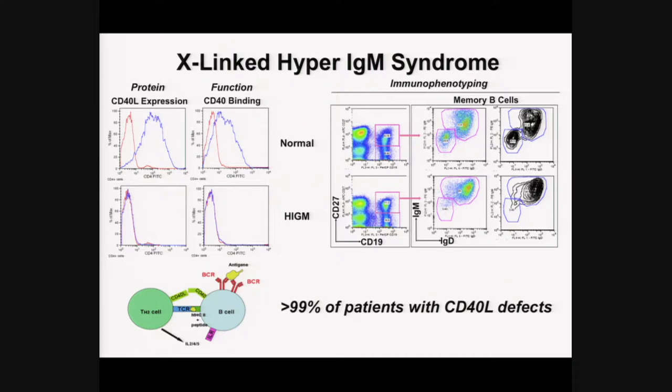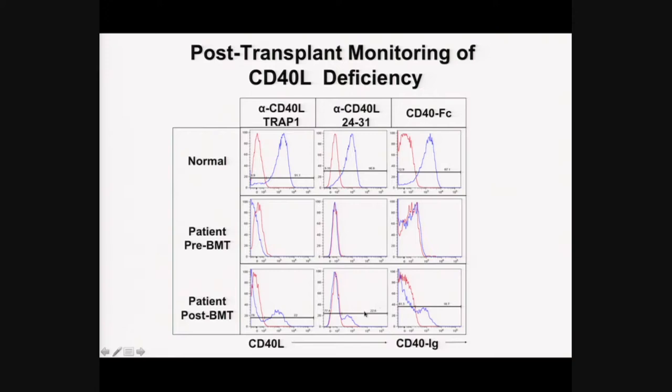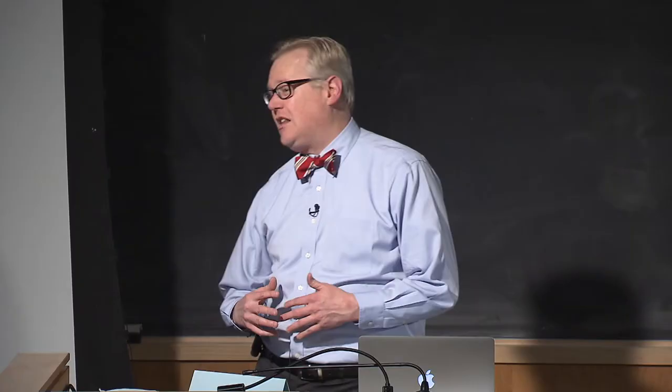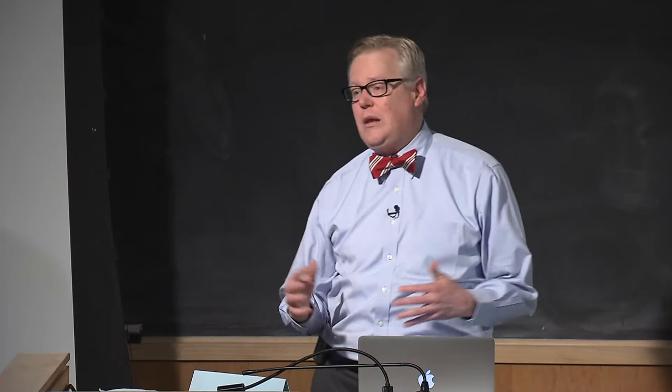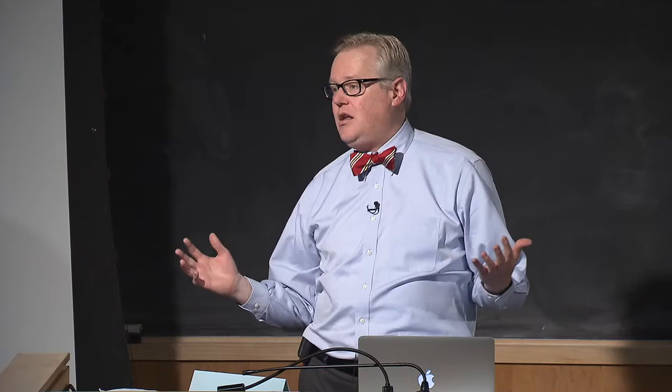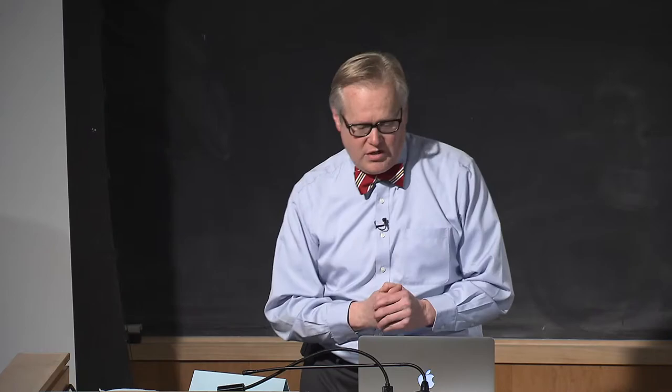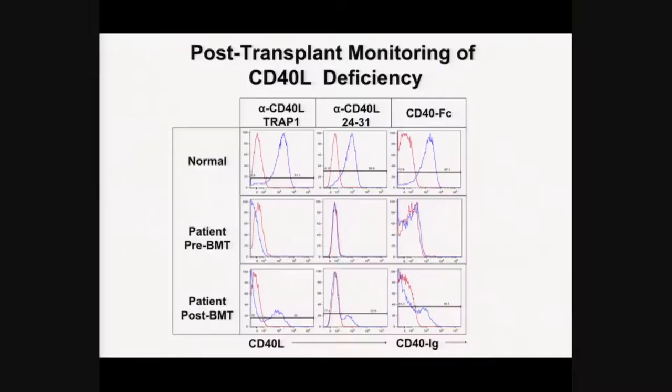This CD40 ligand test can also follow patients post-transplant. A patient with X-linked hyper-IgM syndrome before transplant showed no CD40 ligand expression and no binding; after transplant, about 20% of cells showed CD40 ligand expression and binding — the patient was a mixed chimera with approximately 20% T-cell chimerism from the donor. But 20% — even 10% — is all you need, and the patient was fixed.